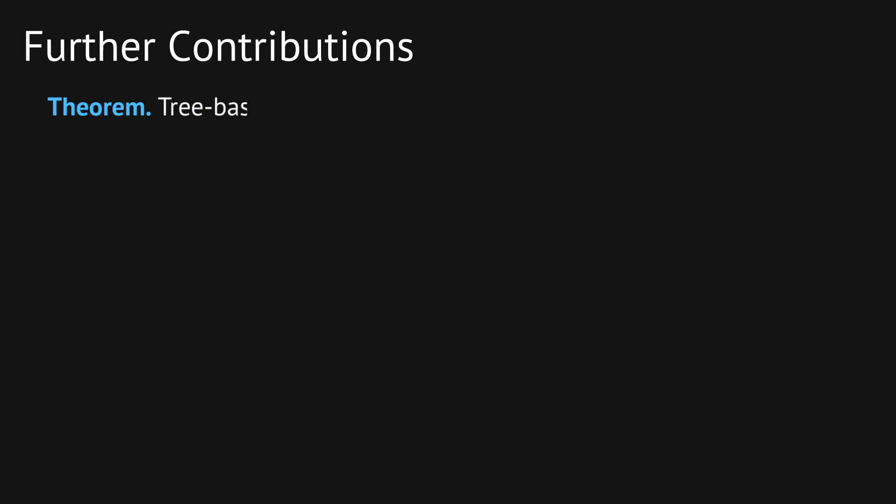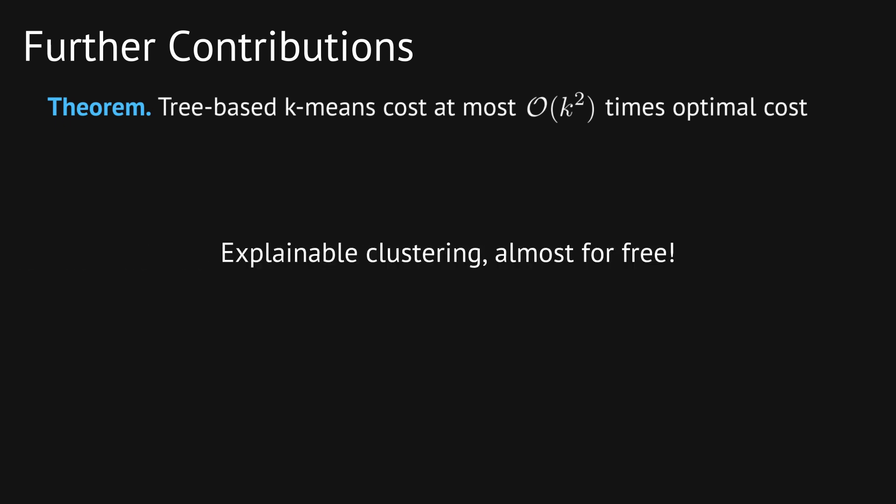We prove that the k-means cost of our tree-based clustering is at most k-squared times the cost of the best possible clustering. This means that the price of explainability only depends on the number of clusters, but not on the total number of points or the dimensionality of the data. Pretty cool, right?